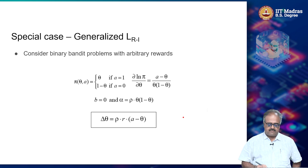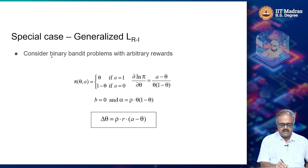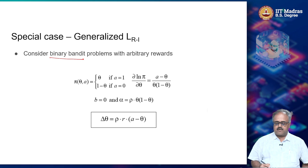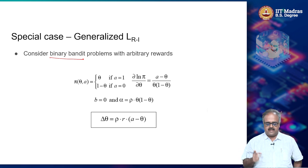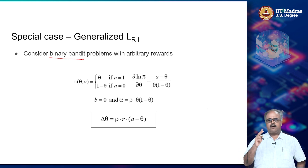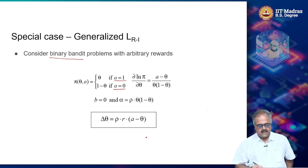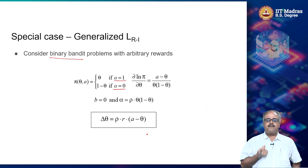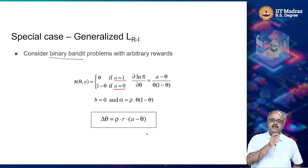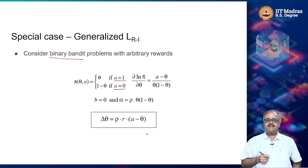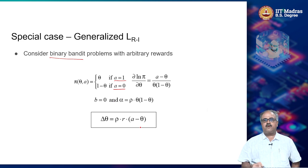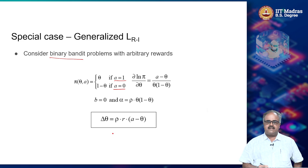We look at a simple case first: the binary bandit problem, where there are only two actions — action 1 or action 0. With a single parameter theta, with probability theta I will select action 1, and with probability 1 minus theta I will select action 0. That is the probability of the action given the setting for theta.